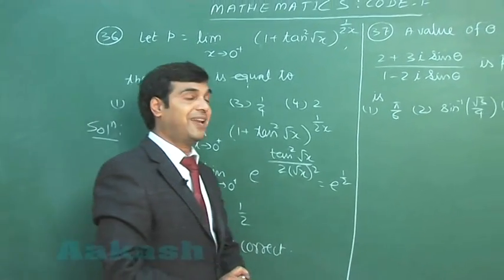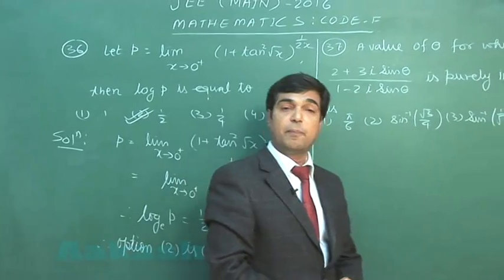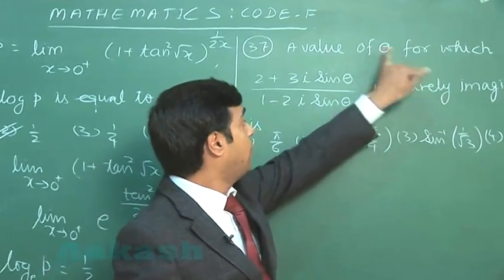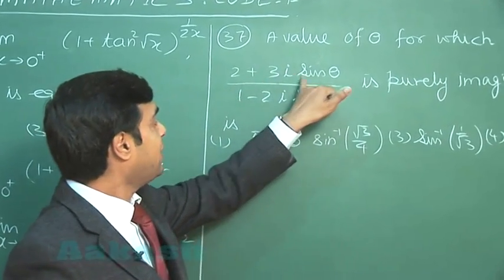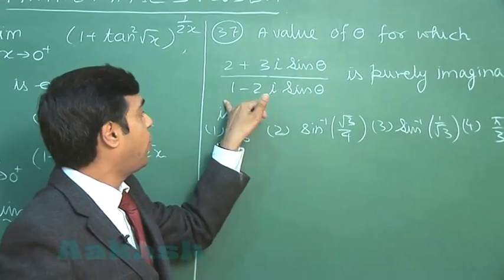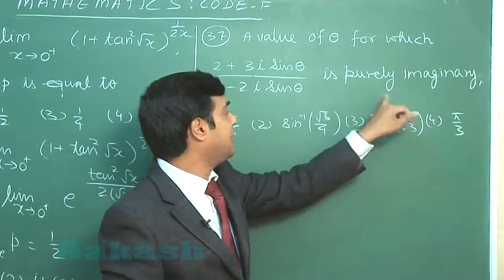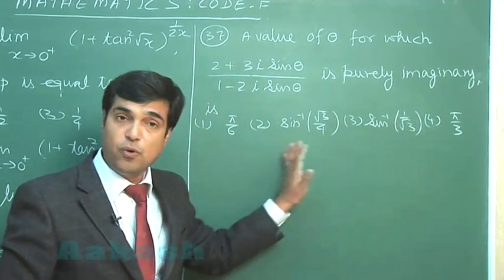Okay, let us move to the next one, that is 37th from complex numbers. A value of theta for which (2 + 3i sin θ)/(1 - 2i sin θ) is purely imaginary is. Four options are given.